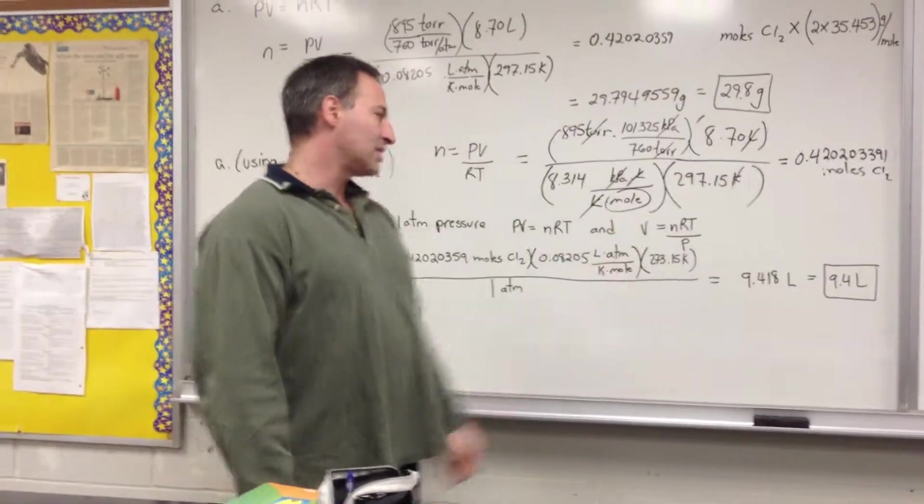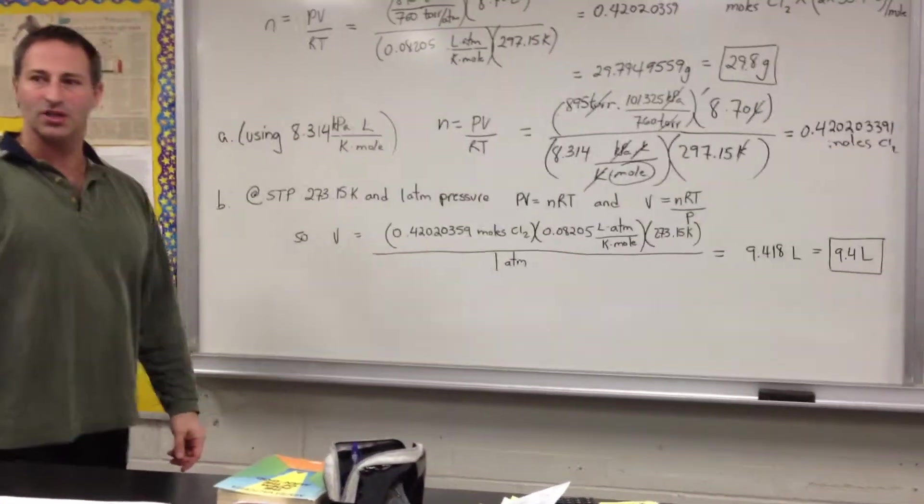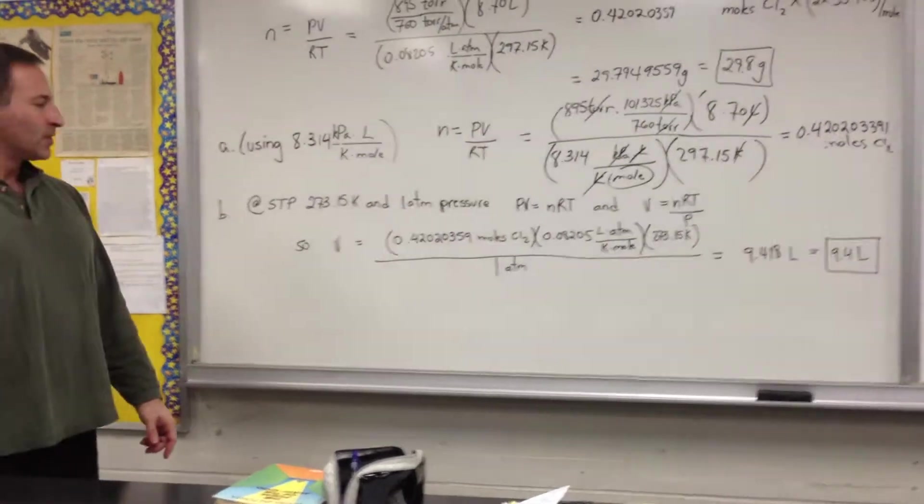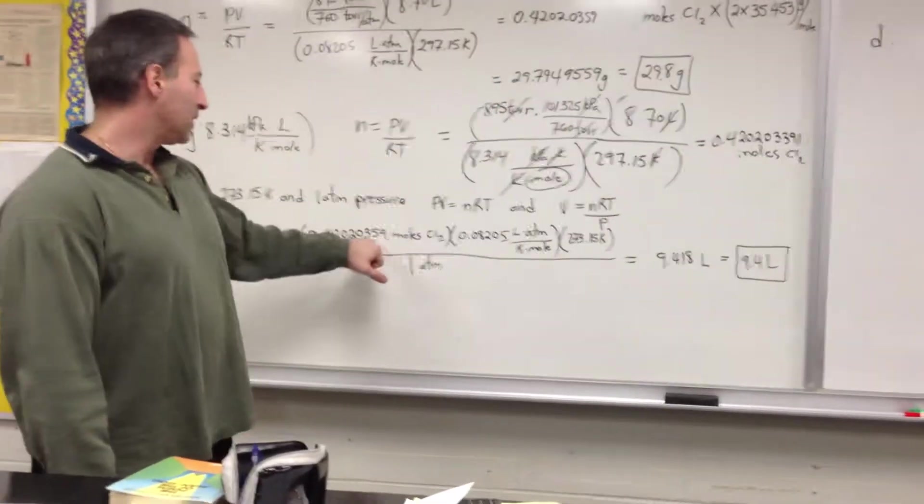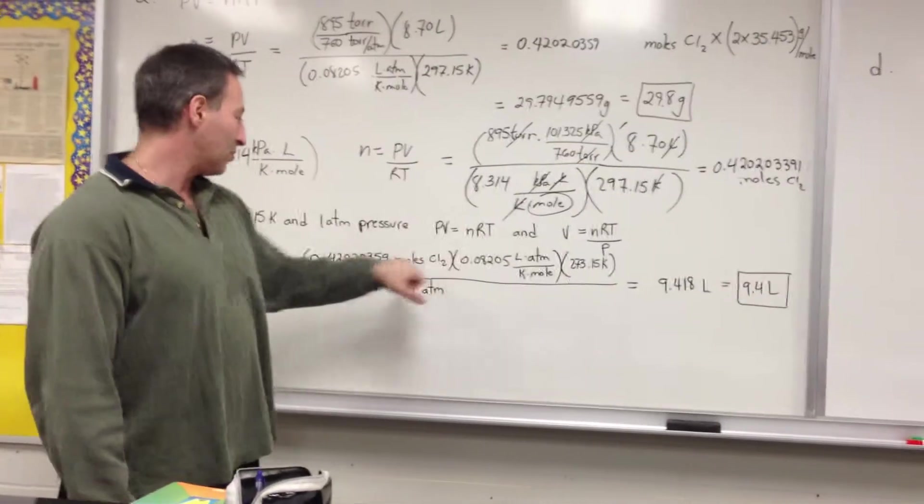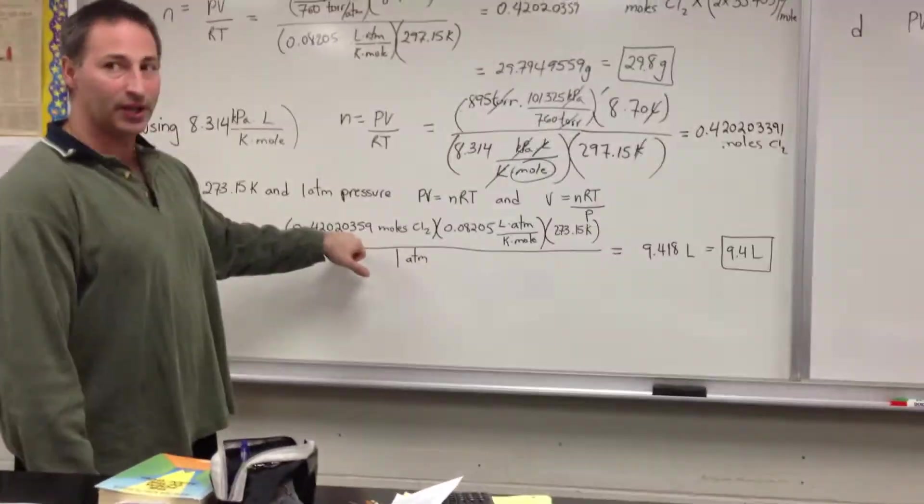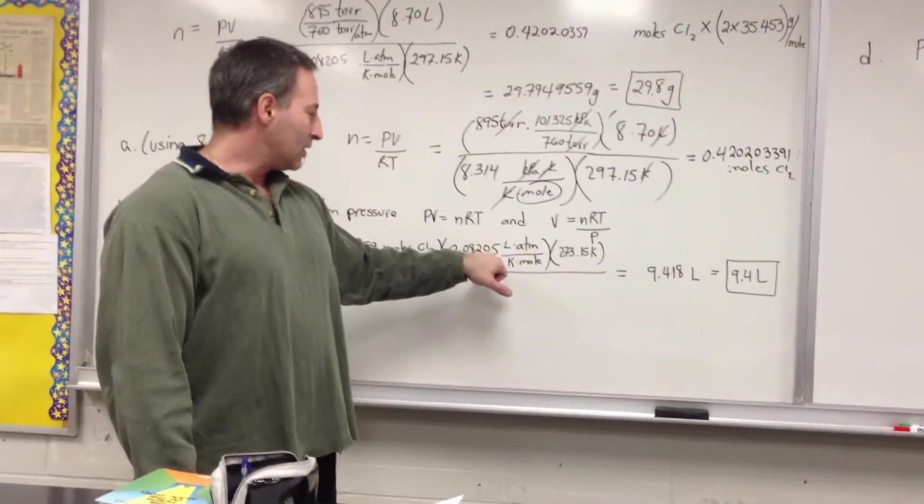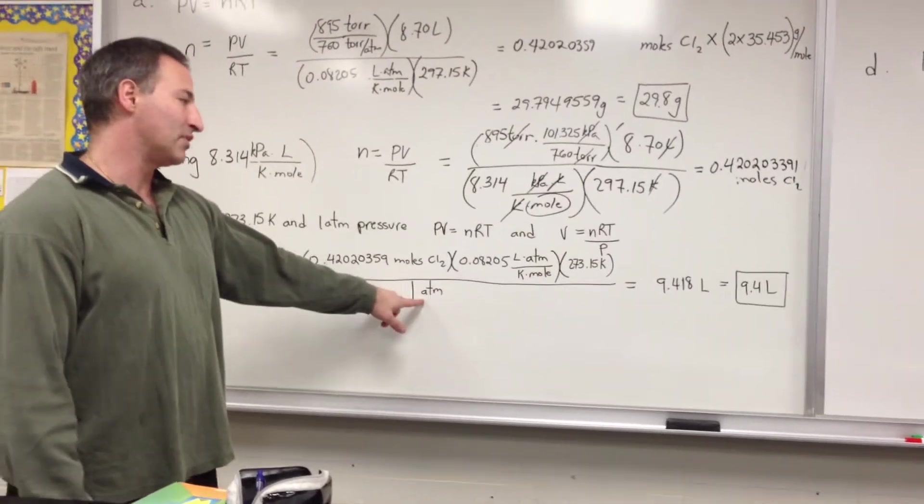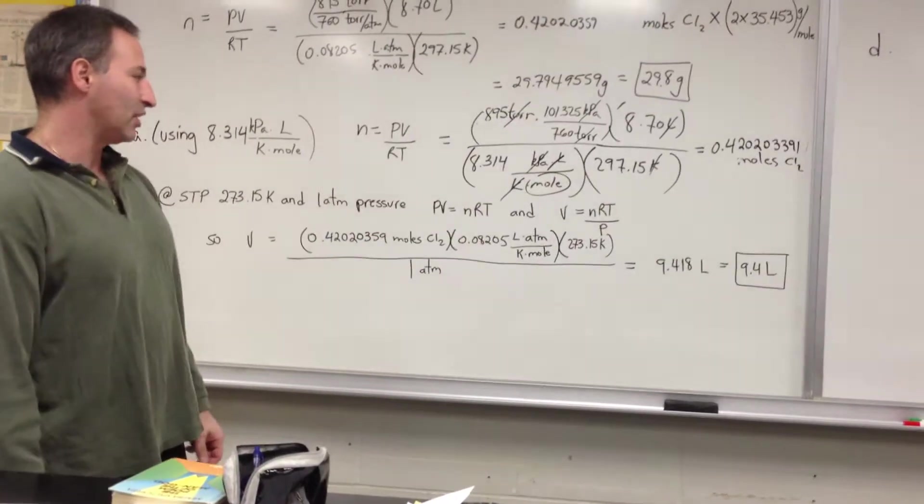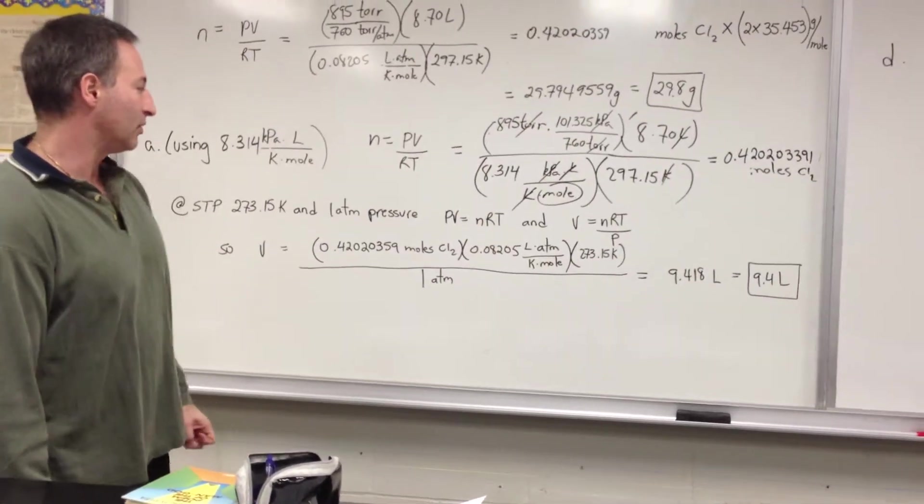They're asking us for the volume of the gas under those conditions. So V, we enter all the numbers in. We use moles from our previous part where we calculated the number of moles for chlorine. The value of R, the number of Kelvin, and then 1 atmosphere pressure. That's standard atmospheric pressure. We get 9.4 liters is the volume.